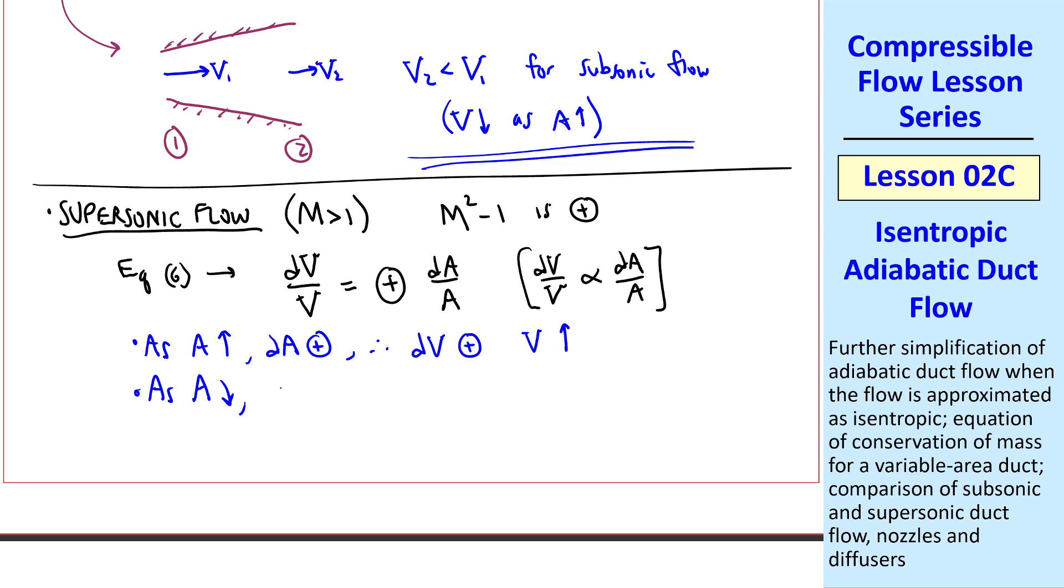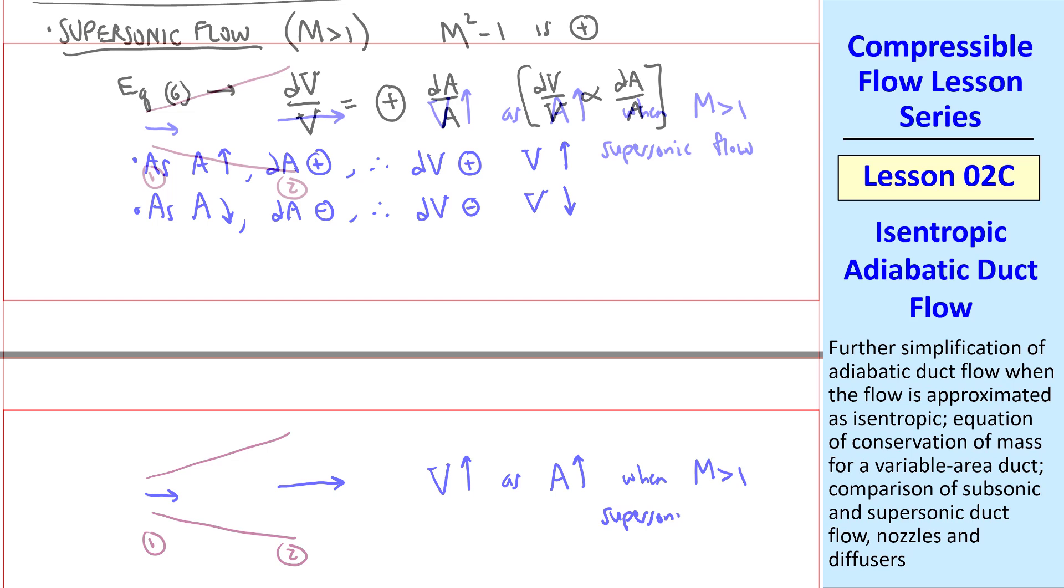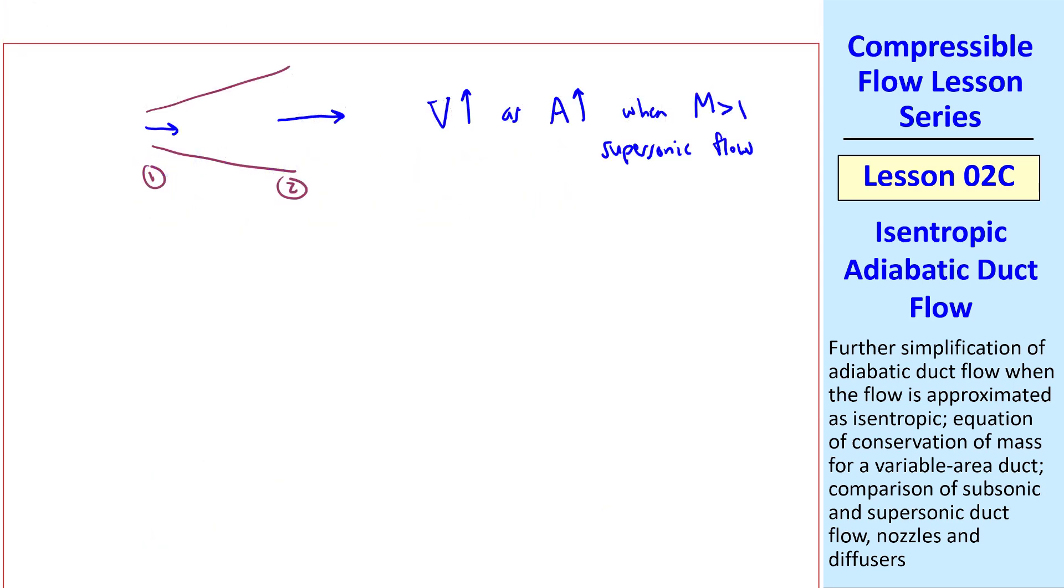And the opposite is the case for a converging duct. dV is negative. In other words, V goes down when A goes down. In our example, diverging duct then, when the flow is supersonic, we have opposite behavior from subsonic flow. Namely, V goes up as A goes up when we have supersonic flow. This one is not so intuitive, and is opposite of everything we learned in incompressible flow.